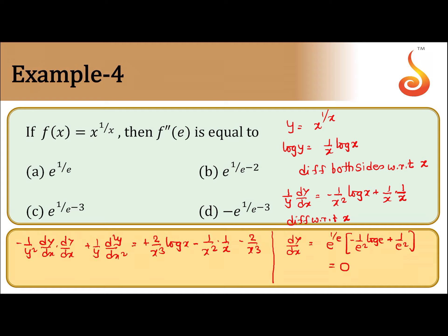Wherever dy by dx is equal to 0, we substitute, so what we get is 1 by y d²y by dx² — the zero term vanishes — is equal to 2 by x cube log x minus 3 by x cube. Now we substitute the value x equal to e, giving 2 by x cube log x minus 3 by x cube.